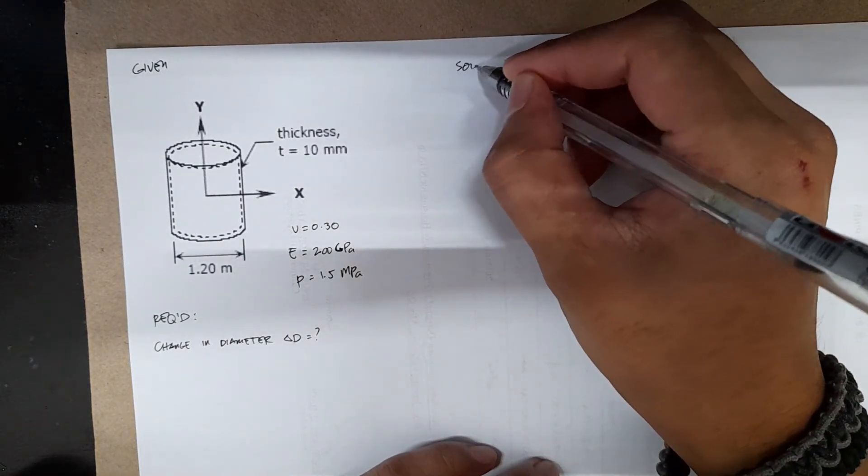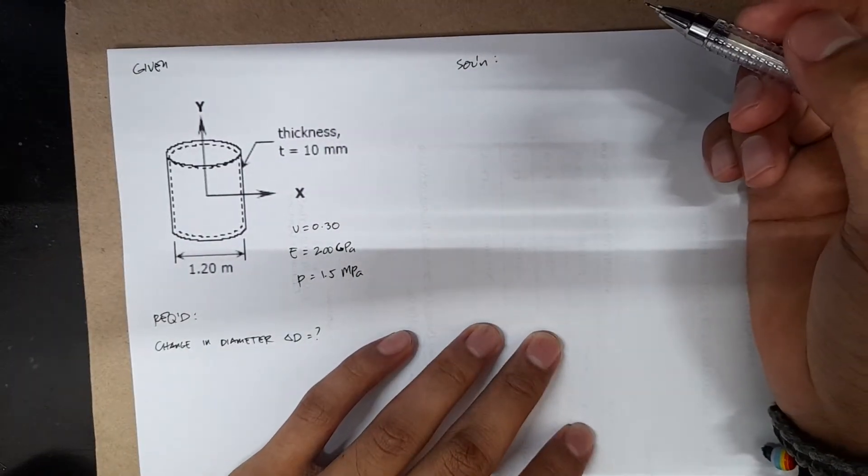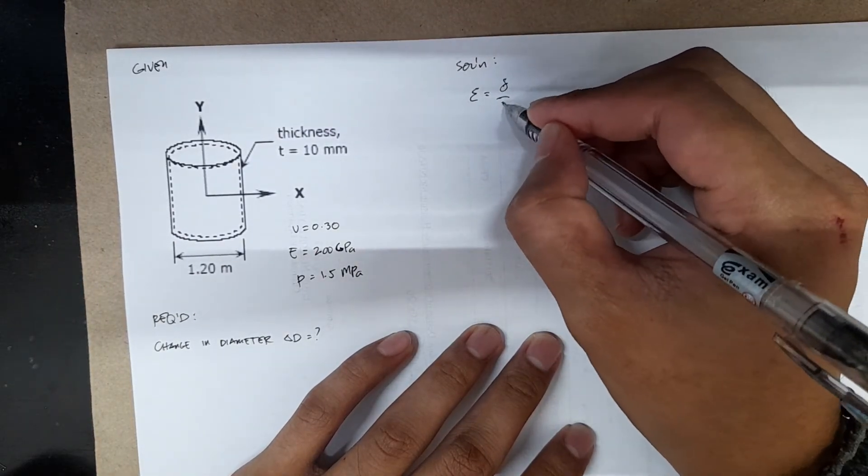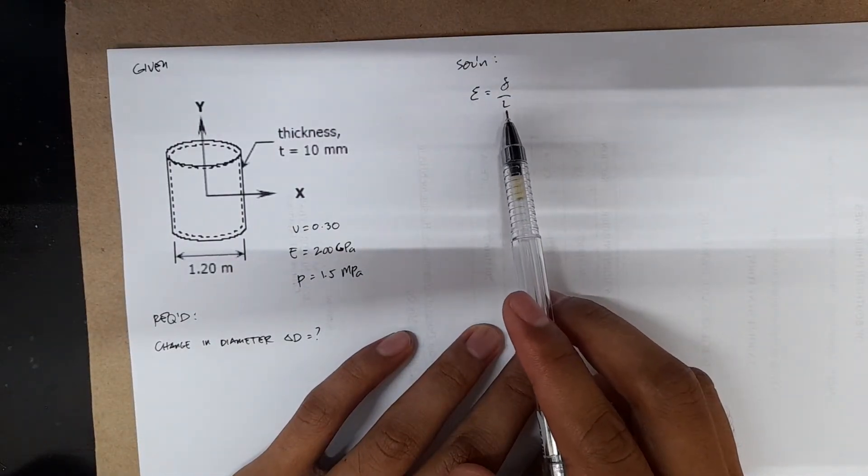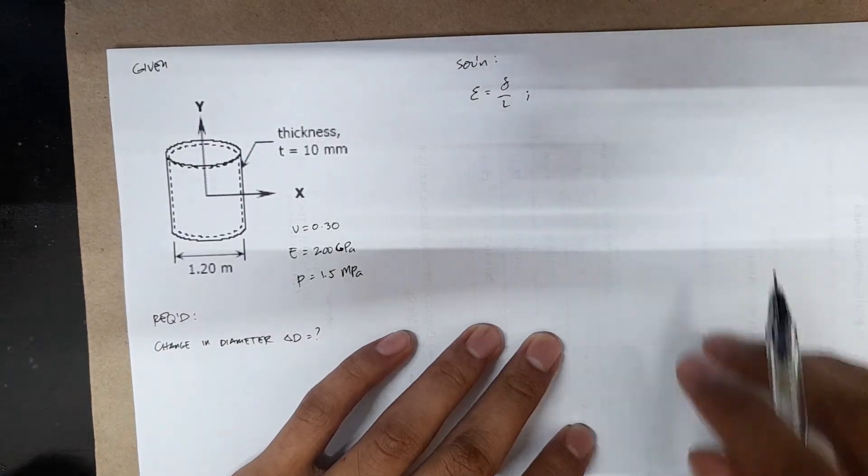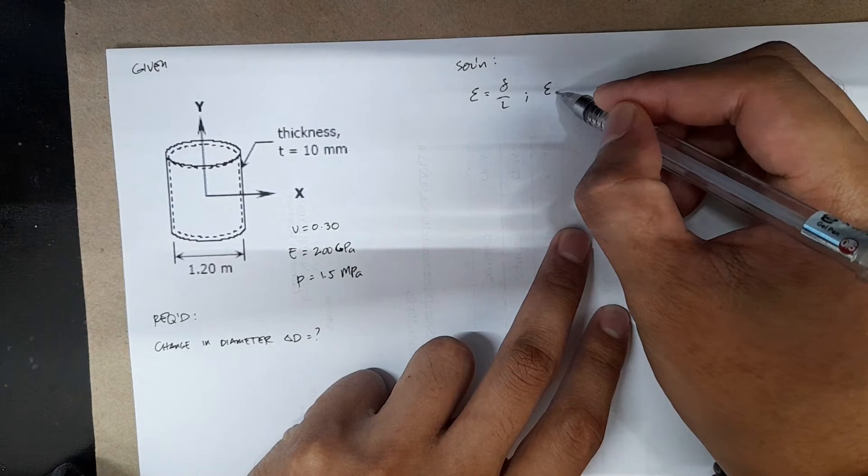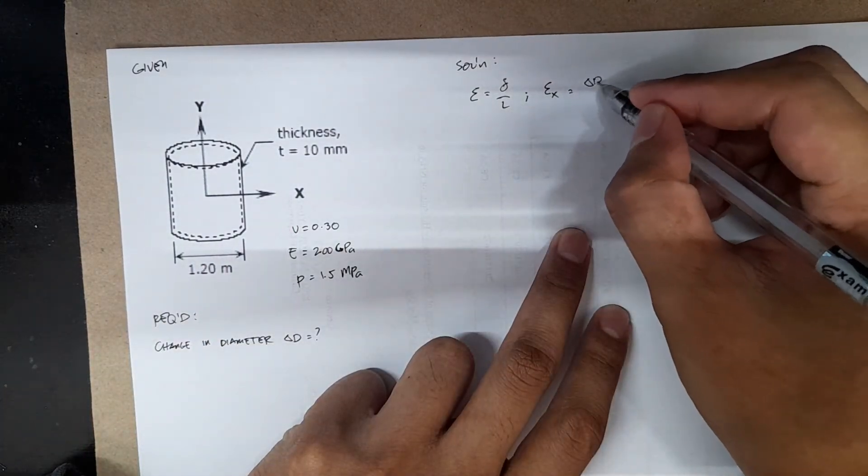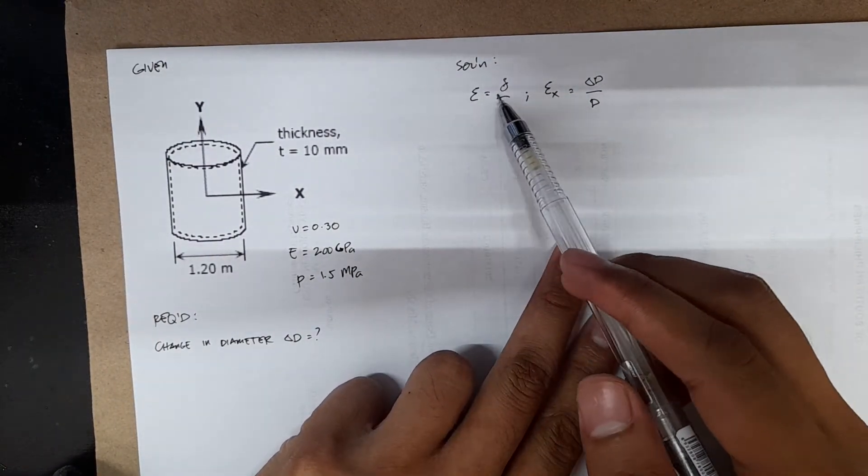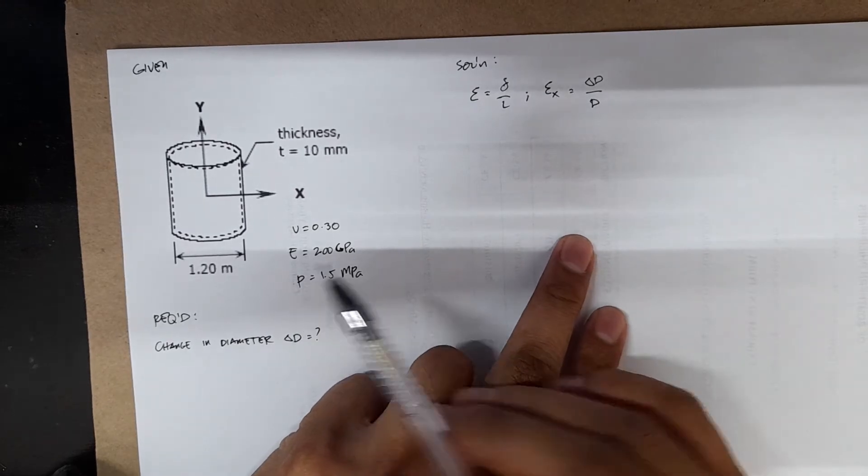Solution. We are actually looking for the change in diameter which we could get from strain. Because we know that strain is just a deformation divided by L, or this is the change in length over the original length. That's the original concept of strain. In this case, we can say that since the diameter is in the x direction, the strain along the x direction is just equal to change in diameter over the original diameter.